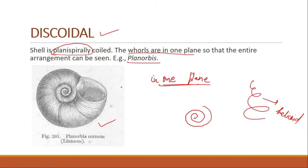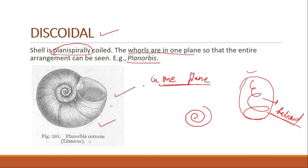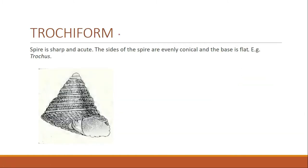In a helicoid shell you can see only one part of the arrangement and cannot see it properly from the side — you have to view it from the top. But in discoidal form, the whole arrangement of the shell can be seen in one plane. So this is the discoidal form and the example is Planorbis.